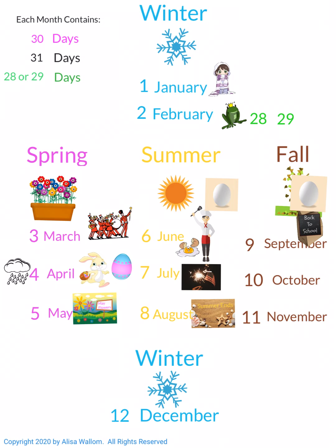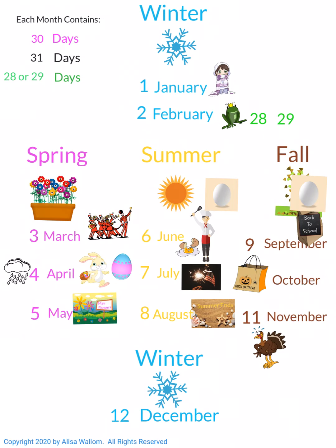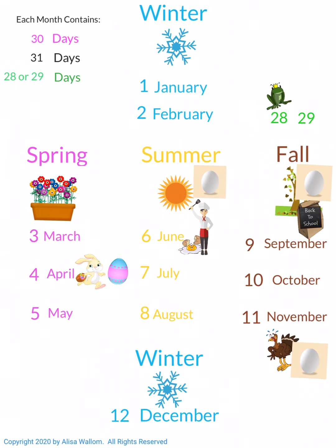And then October, I think of trick-or-treating. And then November, I think of the bird, the turkey. And turkeys can lay eggs — and remember, I said eggs are important. And then December, I think of a Christmas tree. We just learned that all you have to do is make visual spatial pictures to learn the sequence of the months.